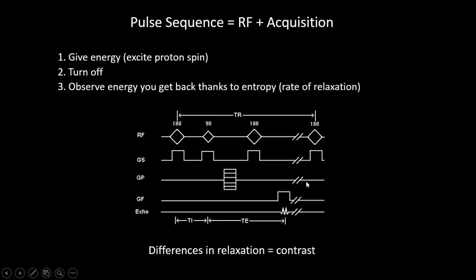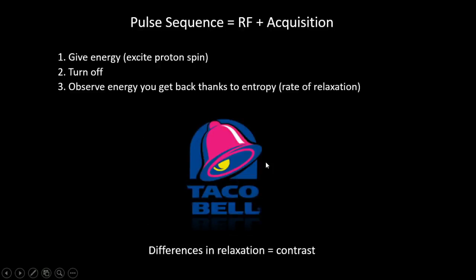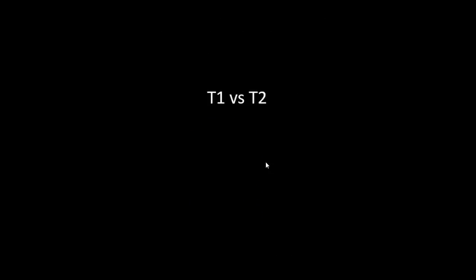Here's the basic schematic of a given pulse sequence. You can see our radio frequency pulses — the x-axis is time — and we've got our different gradients that are reading back information. There are also more components. Keep in mind this is the Taco Bell of MRI sequence explanations: it's going to look good enough on the outside, you'll get the gist of it, hopefully somewhat enjoyable, but you really don't want to get too into the nitty-gritty. Okay, so let's start with T1 versus T2.